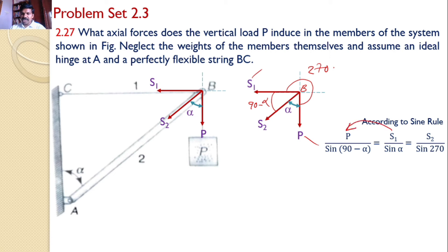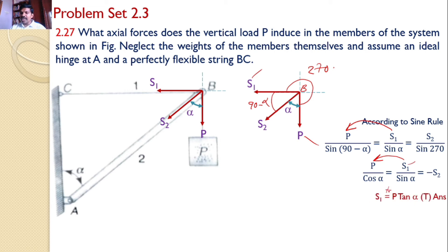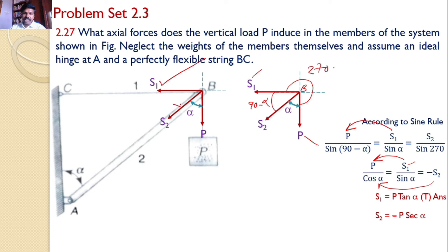Since sin(90 − α) = cos α, we write P / cos α = S1 / sin α = S2 / sin(270°). Since sin(270°) = −1, this becomes −S2. Taking the first two expressions: S1 = P tan α. Getting a positive value means the initial assumed tensile direction for S1 is correct. For S2: P / cos α = −S2, so S2 = −P sec α. Getting a negative means the assumed tensile direction is wrong; hence S2 = P sec α, compressive.